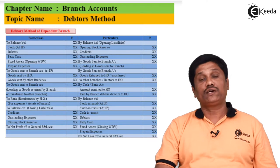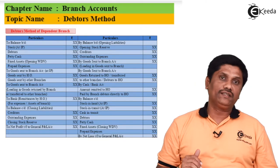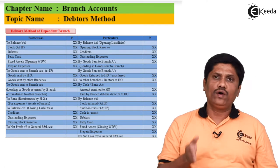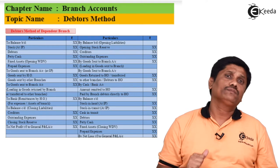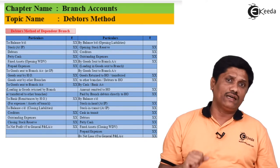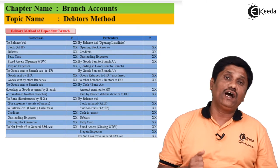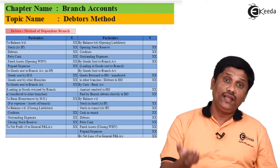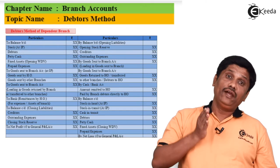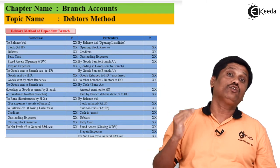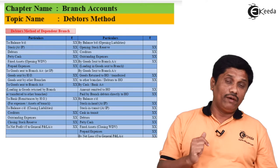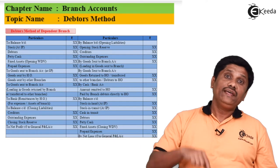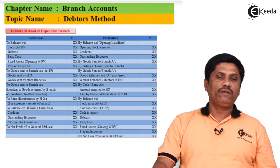Sometimes one branch sends goods to another branch. For example, if goods go from Delhi branch to Kolkata branch, the head office treats it as if Delhi branch returned goods to the head office, and the head office then sent goods to Kolkata. So in the records, it is shown as 'goods sent by other branches' — the inter-branch transfer is routed through the head office in accounting.